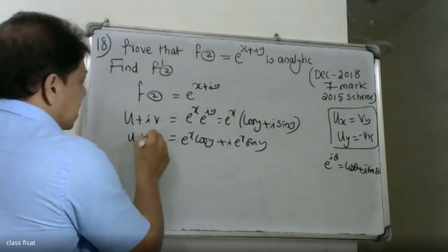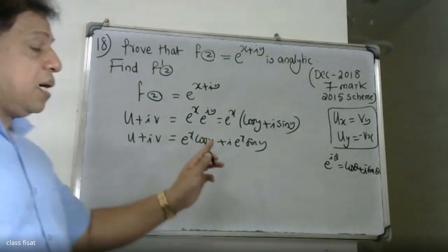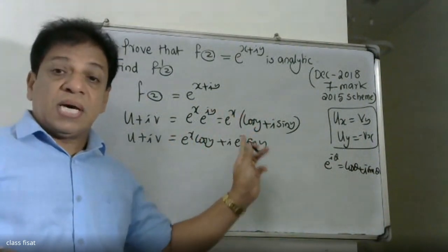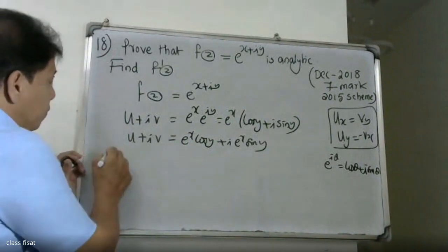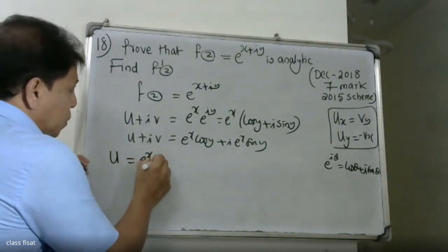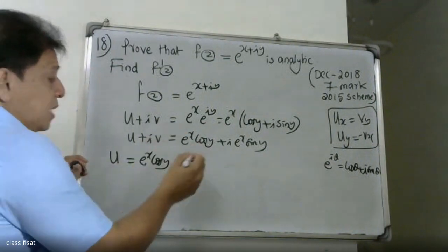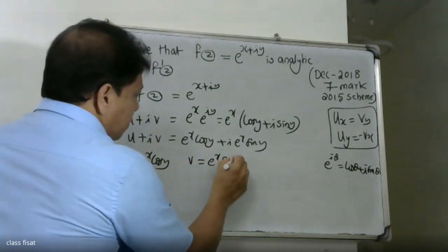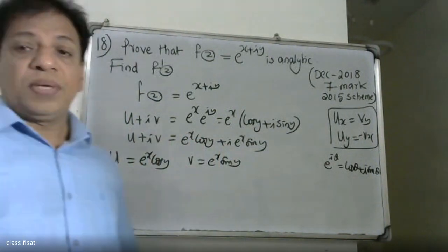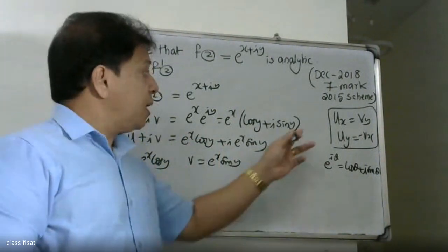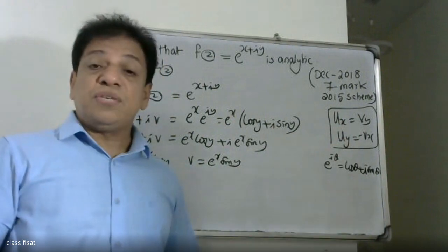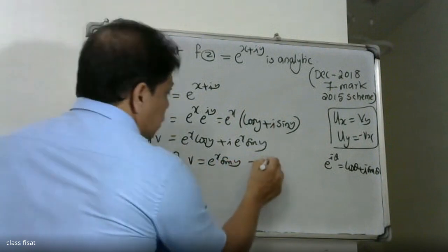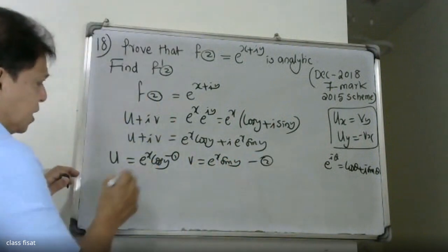This is U + iV. We need to identify the real part and imaginary part separately. The real part U = e^x·cos(y), and the imaginary part V = e^x·sin(y). Let me write this as equation 1 and equation 2.